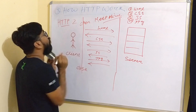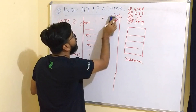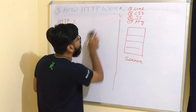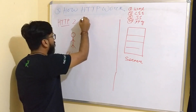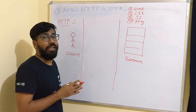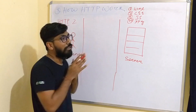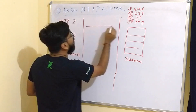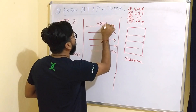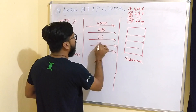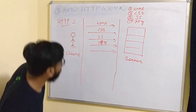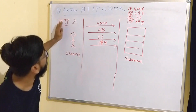Next is HTTP 2. What is the difference between HTTP 1 and HTTP 2? In HTTP 2, the same connection allows you to request over a single channel. So for all the files — HTML, CSS, JS, and JPG — you send all requests together in one channel. This is the way requests work in HTTP 2.